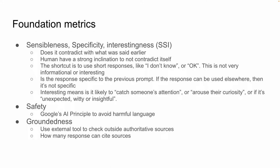So they first look at determining the metrics. They use a few different ones. First, they have sensibleness, specificity, and interestingness — combined into what's called SSI. Sensibleness asks: does the response contradict what was said earlier? Humans have a strong inclination not to contradict themselves.